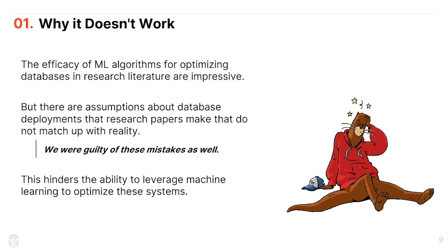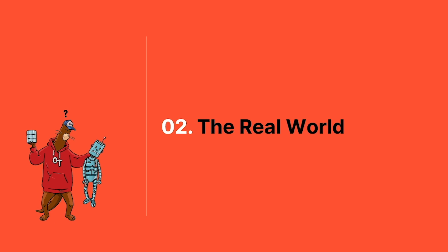The performance improvements you see from these ML models are amazing — we're talking 3x, 10x, 4x improvements over stock configurations. But there's a key challenge: the research papers, including our own, make assumptions about how people use ML-based tools in the real world that simply aren't correct. When we went into the real world, it turned out we were completely wrong, and there was a bunch of stuff we had to do to make our ML models work correctly and safely. I'm going to talk about three key challenges we faced and why they're problematic when using ML-based tools.